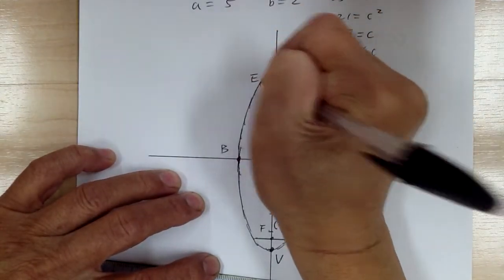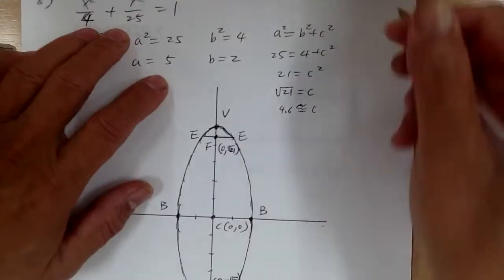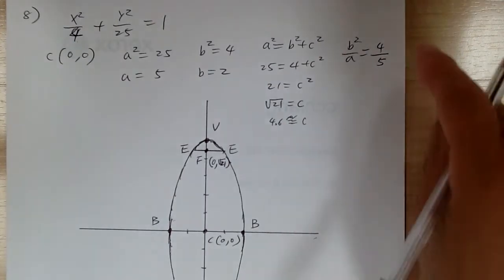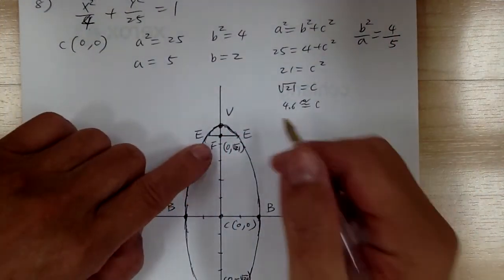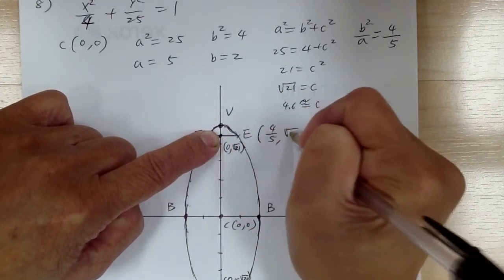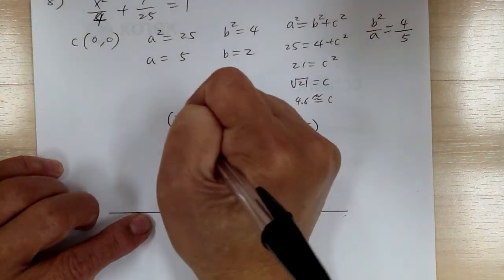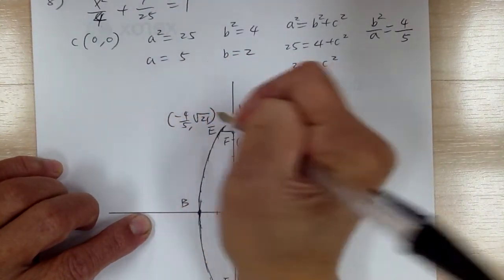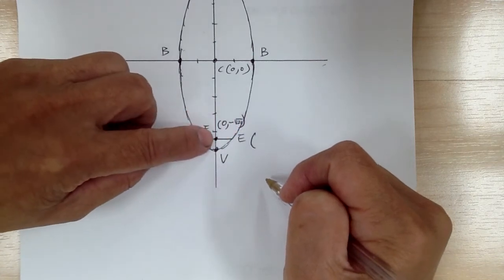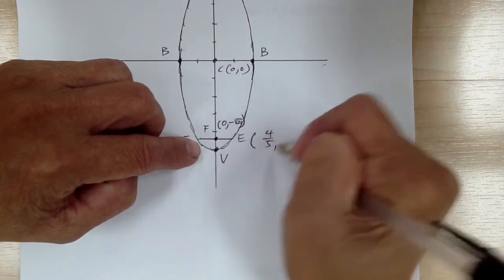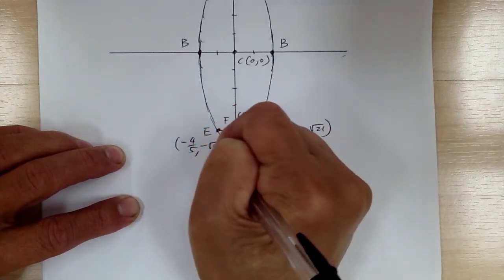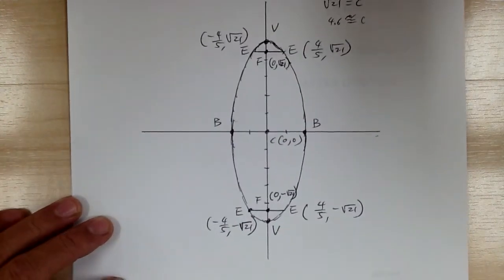For the E points, b squared over a equals 4 over 5. Starting from (0, √21), going sideways you add onto x: (4/5, √21), going the other way: (-4/5, √21). Starting from (0, -√21): (4/5, -√21), and going the other way: (-4/5, -√21). That's everything.